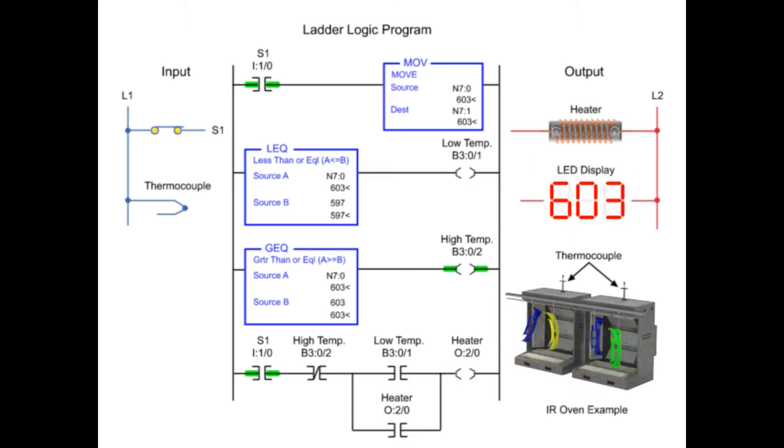To control the circuit, S1 is programmed in the heater output circuit. Addressed to the move instructions is a thermocouple that provides an analog value of the temperature. The temperature is moved from the source to the destination when S1 is activated and is displayed on the LED panel.